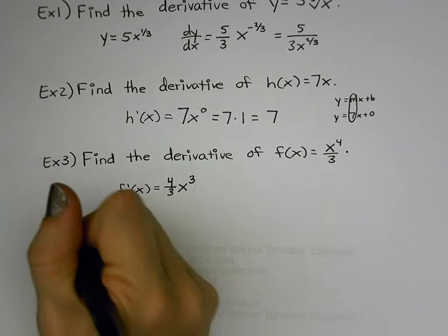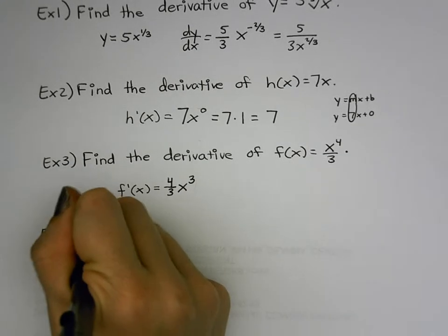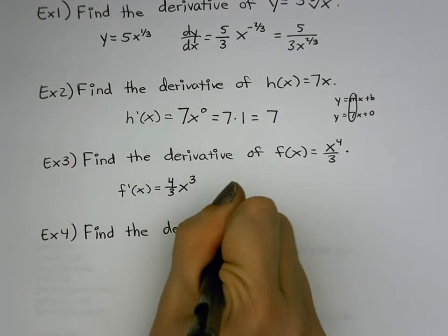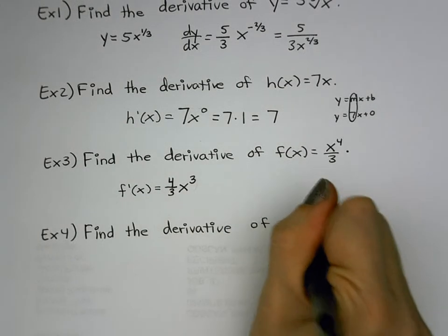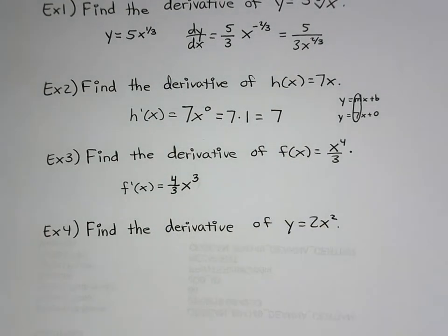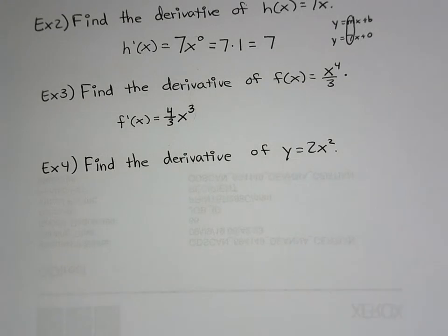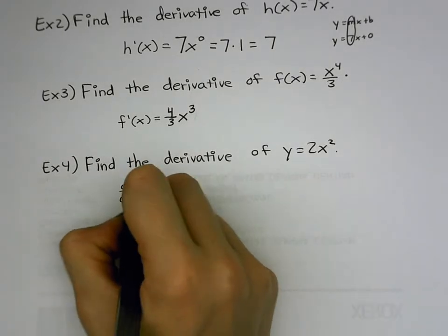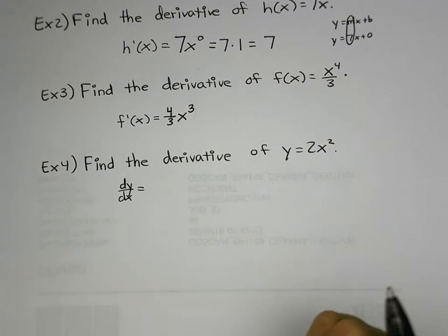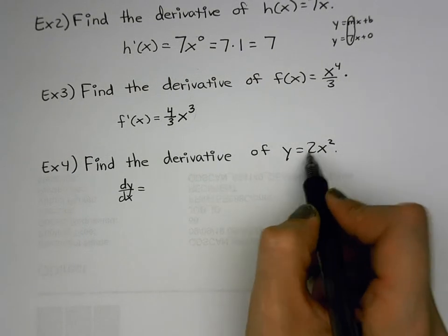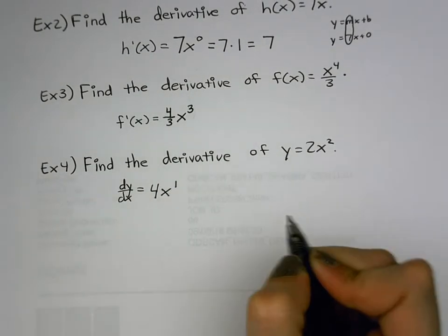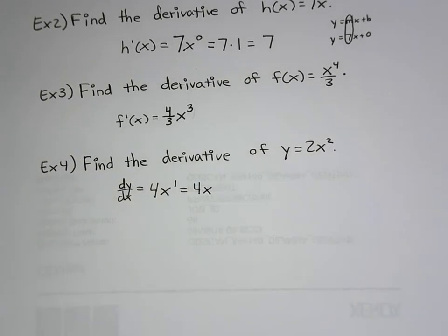Example four: find the derivative of y = 2x². This is constant multiple rule — the two is a coefficient that just hangs out. Apply power rule on x²: bring the exponent down, two times two is four, leave the base alone, subtract one from the exponent. The derivative is 4x.